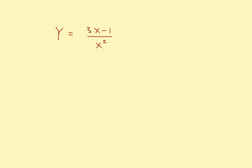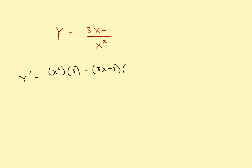In this case the numerator is 3x minus 1 and the denominator is x squared. Applying the rule — and if you just say it as you write it, it makes it fairly easy — it would be equal to the denominator times the derivative of the numerator, which would be 3, minus the original numerator times the derivative of the denominator, which would be 2x, and the entire thing divided by the denominator squared.